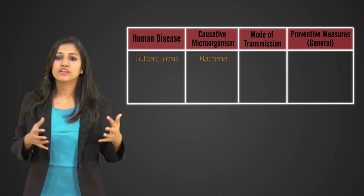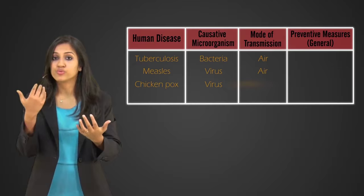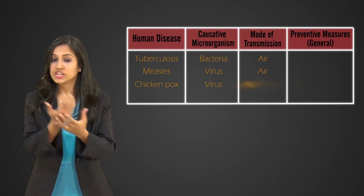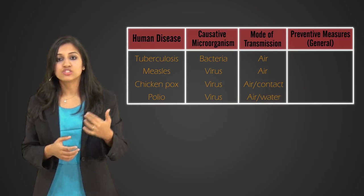Tuberculosis is formed by bacteria. It's spread through the air. Measles is caused by virus, again it's spread through the air. Then you have chickenpox, which is also caused by a virus which can spread if you touch the person who has it or even through air. And then you have polio, which is also caused by a virus and it's also spread again through air or water.